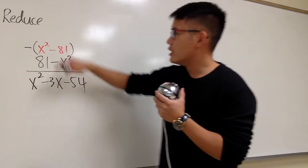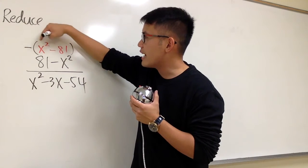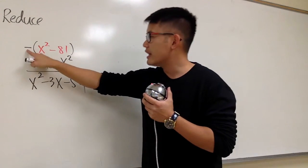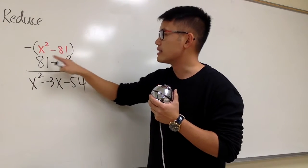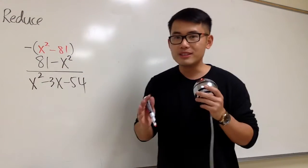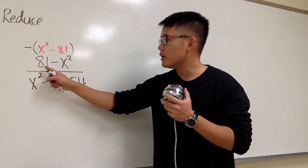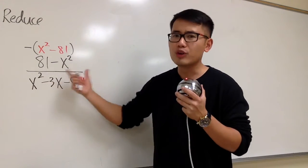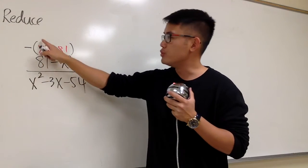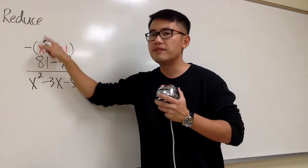We are just negating the result after we switch the order of the subtraction. And we can do a quick check. If you distribute the negative inside, you see negative x squared, that's the original. Negative times negative 81, that's the positive 81, which is still the original. So whenever you are subtracting things that's out of order, just switch it to the order that you would like, and be sure you put a parenthesis and negate the result.